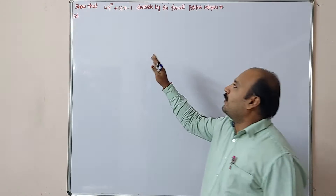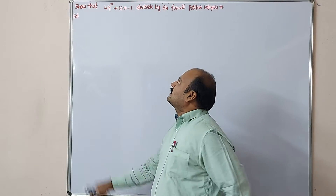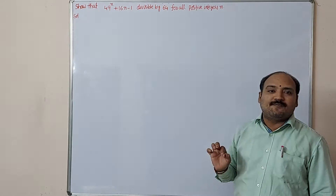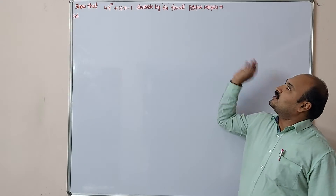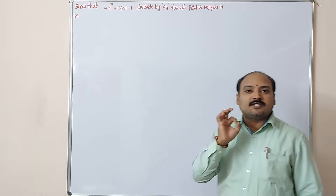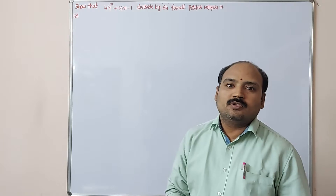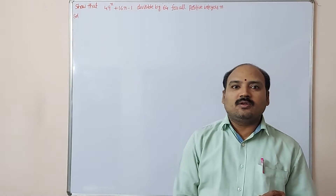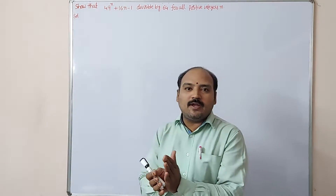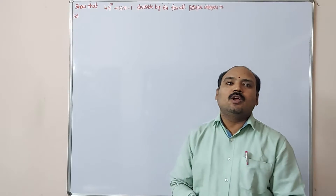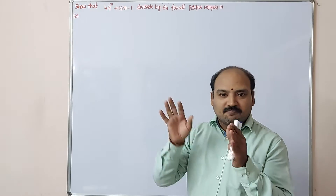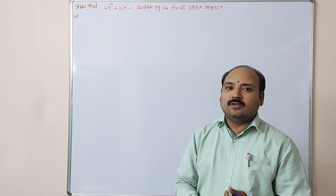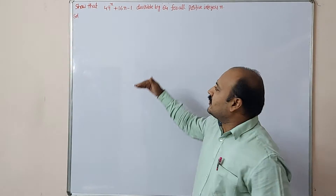Show that 49 power n plus 16n minus 1 is divisible by 64 for all positive integers n. In mathematical induction, first you have to write the given statement. You can assume S of n — that is the first step you have to consider.